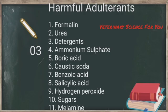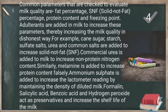Common parameters used to evaluate milk quality are fat percentage, SNF (solids-not-fat) percentage, protein content, and freezing point. Adulterants are added to milk to increase these parameters, thereby increasing the apparent milk quality in a dishonest way. For example, cane sugar, starch, sulfate salts, urea, and common salts are added to increase solids-not-fat.